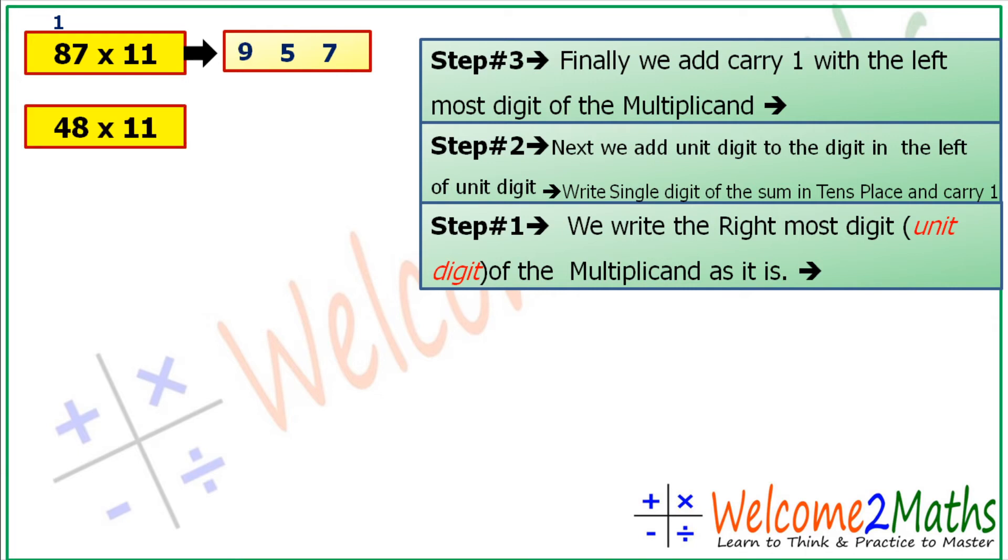After that, 48 into 11. So let's write 8, the rightmost digit of 48. Then 8 plus 4 is 12, so let's write 2 at tens place and 1 plus 4 is 5. Then 67 into 11. So at first 7, then 6 plus 7 is 13, so let's write 3 here and 6 plus 1 is 7.